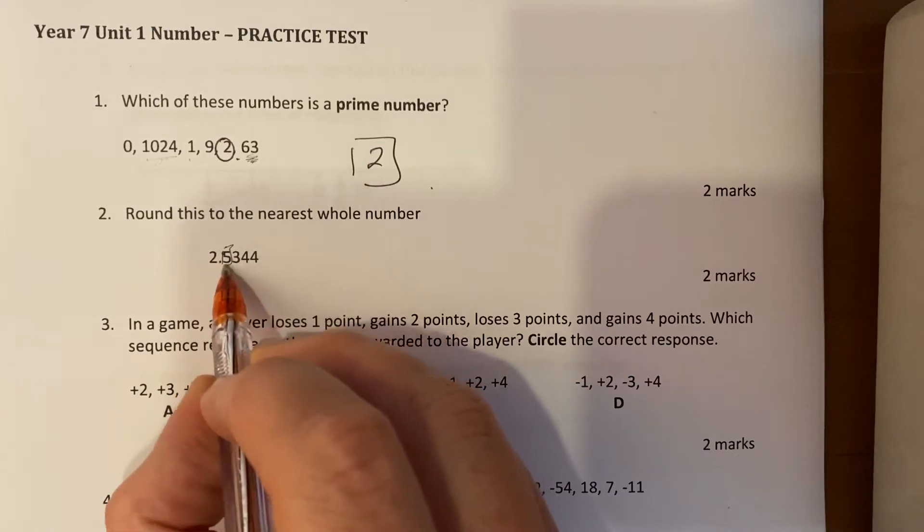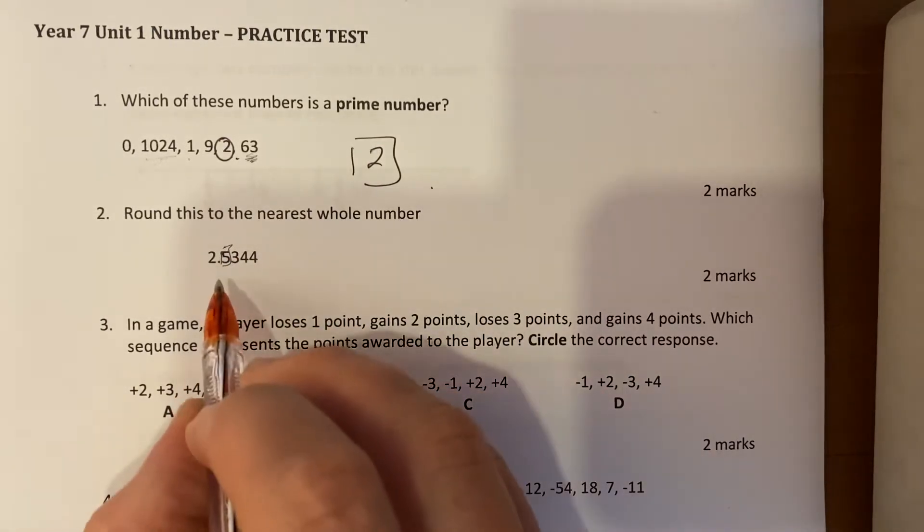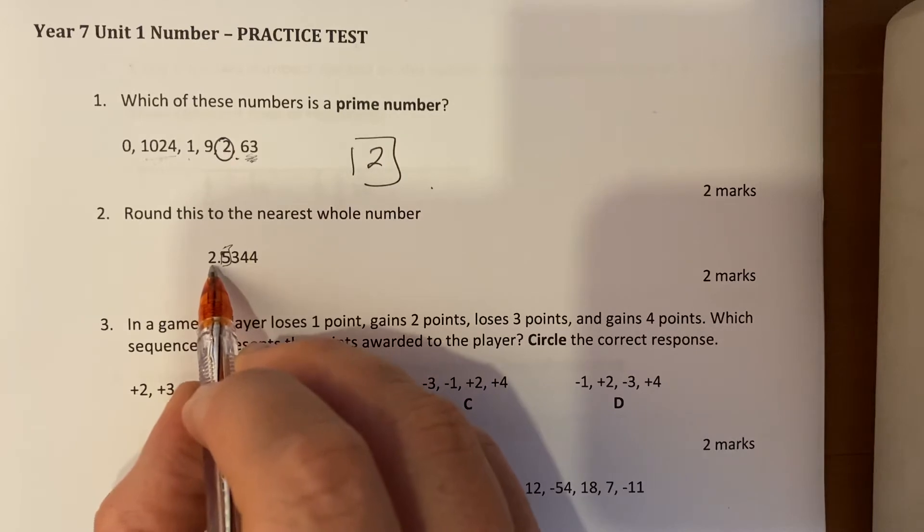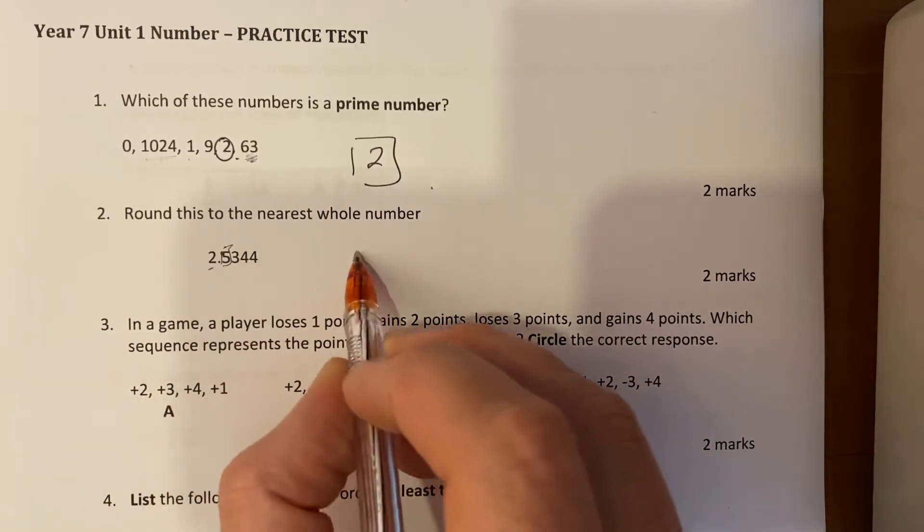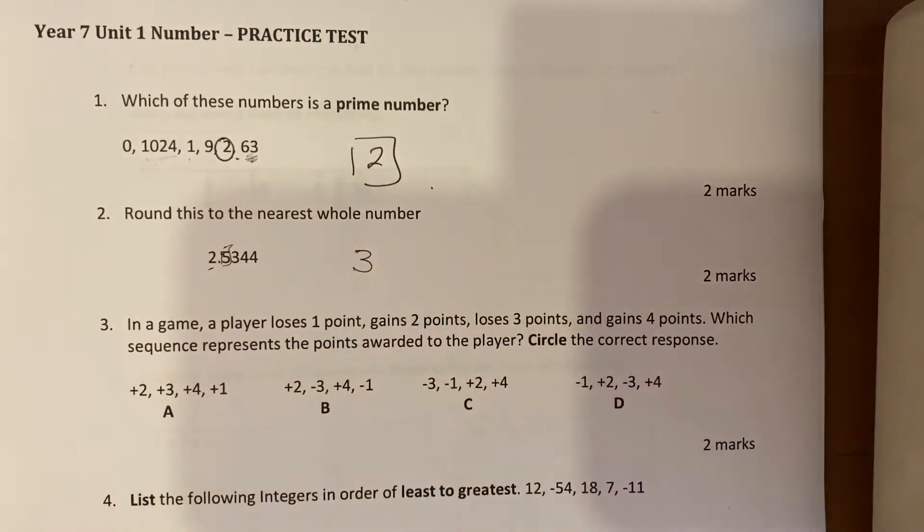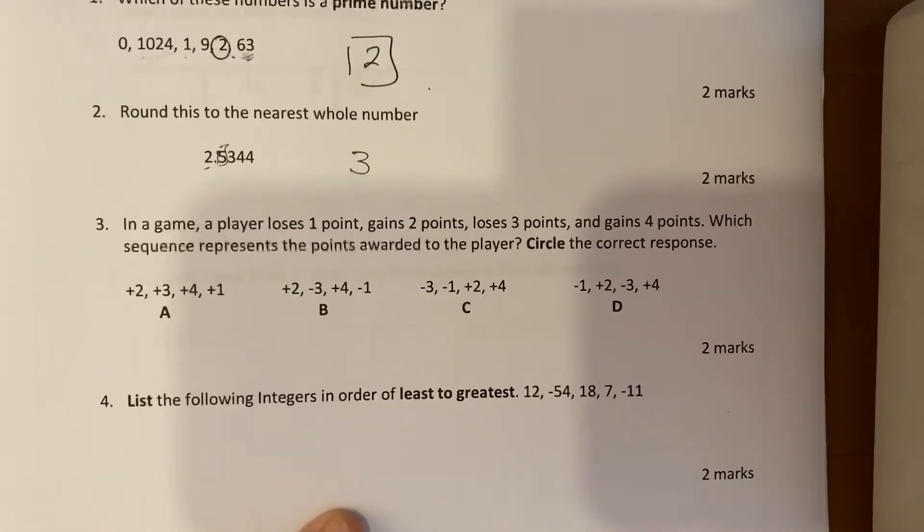Rounding to the nearest whole number, so that means we must look at this five here. If it's five or more it would round up, so you're looking at the first digit. That's gonna round up to three.